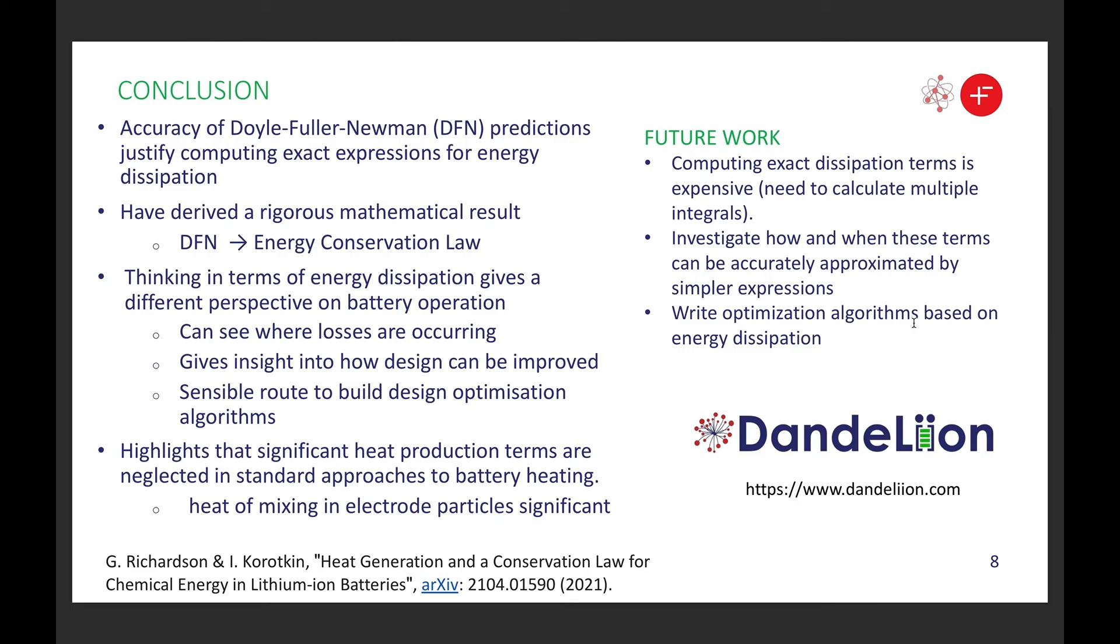In conclusion, the accuracy of the Doyle-Fuller-Newman model predictions justifies computing exact energy dissipation. We've derived a mathematically rigorous result which shows that if you have the Doyle-Fuller-Newman equations, they imply this energy conservation law. I think this is a helpful way of thinking about how batteries operate, to think in terms of where the energy dissipation occurs because it allows you to see where losses are occurring. It gives insight into how you can improve the design of the battery, and therefore I think it's a sensible route to build design optimization algorithms. It also highlights the significant heat production terms being neglected in standard approaches to battery heating, in particular the heat of mixing in electrode particles. I think I'll finish there.